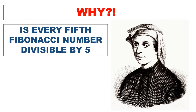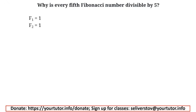The Fibonacci sequence is defined as follows. The first two numbers of this sequence are 1s, and each subsequent number is equal to the sum of the two previous ones. For example, the third number is the sum of the first and second — that is, the sum of two 1s — or 2.